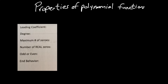The purpose of this video is to talk about some of the properties of polynomial functions — specifically the leading coefficient, degree, maximum number of zeros, number of real zeros, whether the function is odd or even, and end behavior. You're probably going to need a graphing calculator to benefit from this video, and since I can't put fancy graphs up, you'll have to deal with my hand-drawn approximations.